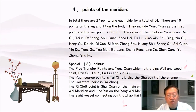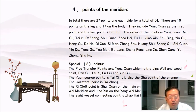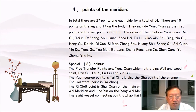Points of the meridian: in total there are 27 points on each side for a total of 54, with 10 points on the leg and 17 on the body. The first point is yong chuan and the last is shufu. The points in order are: yong chuan, ran gu, tai xi, da zhong, shui chuan, zhao hai, fu liu, jiao xin, zhu bing, yin gu, hong gu, da he, qi shui, xin nan, zhong zhu, huang shu, sang chu, shi guan, yin du, tung gu, yao men, bu lang, seng feng, ling shu, shantang, yu zhong, and shufu.